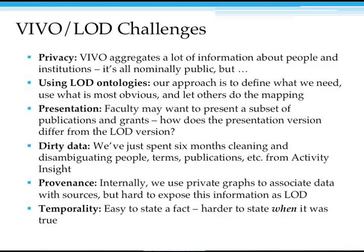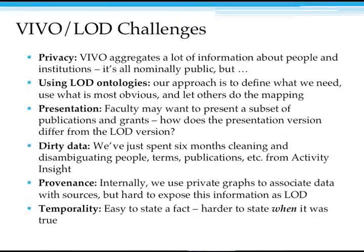Provenance is another concern for linked open data. We draw on multiple sources — faculty can provide their own information, we draw on sources of record from the university, and we draw from sites like PubMed. Within the VIVO system we actually maintain individual private graphs so we can find out the provenance of any statement, but there's a challenge in how we make that available — we can't do it just in the RDF. Temporality is also a challenge: it's easy to state a fact in RDF, but it's a lot harder to state when it was true.